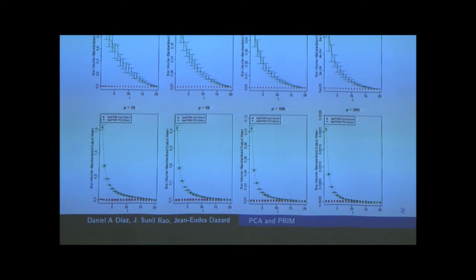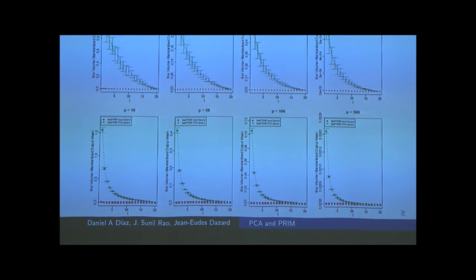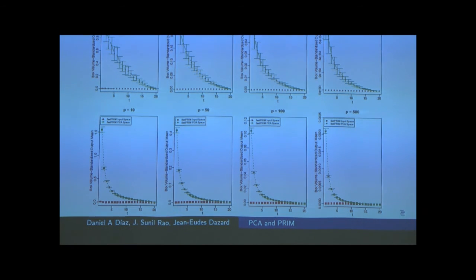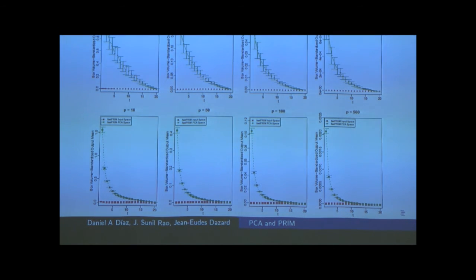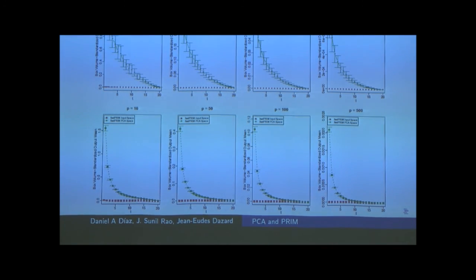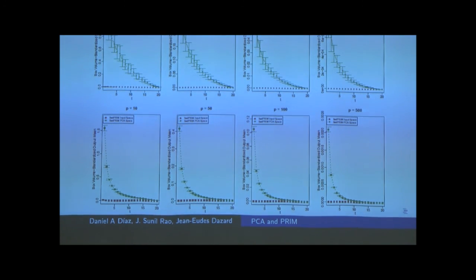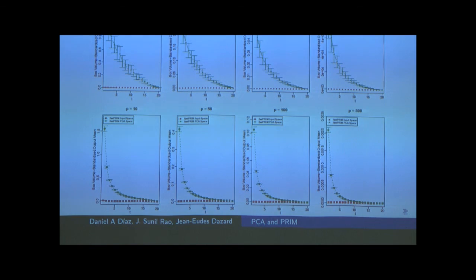The magic is not being done by the algorithm — it is done in all these cases by the principal components. This is exactly what we were getting with the theoretical result explained in the first part of the talk. Are there any questions?